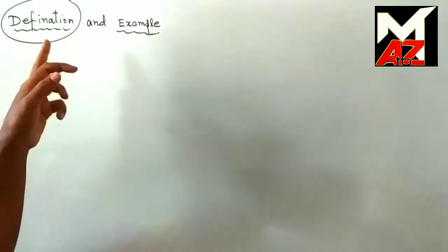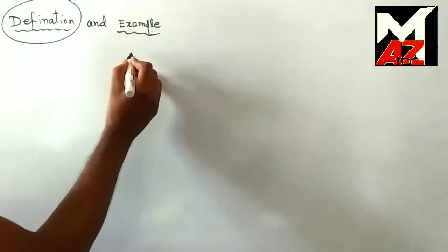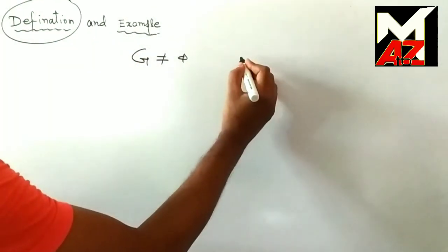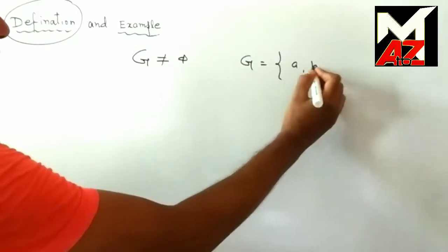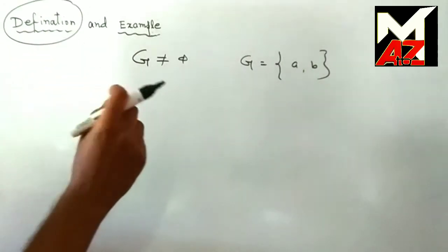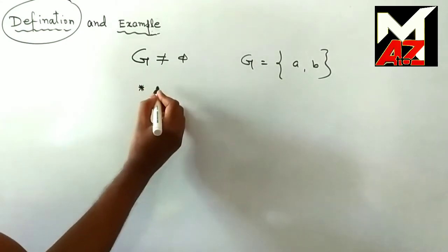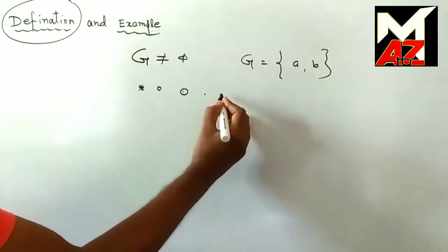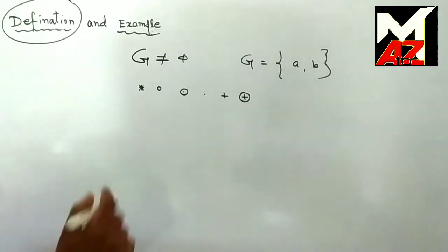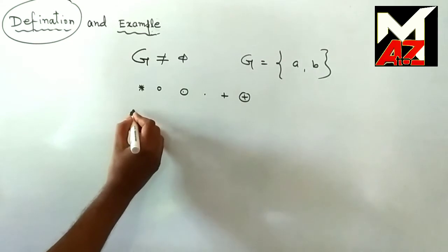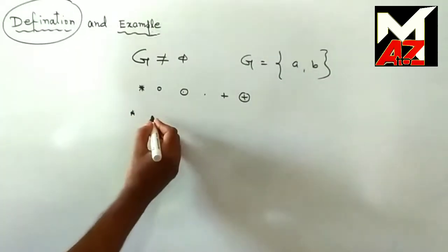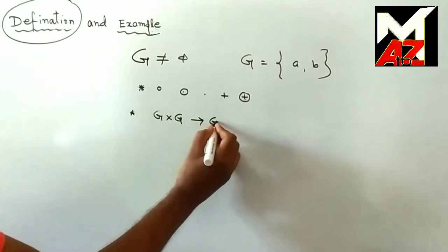Before giving the definition, we introduce a non-empty set G, where G is not equal to the empty set. Here G has two elements, A and B. Now we define a binary composition on G. The binary composition is sometimes denoted by star, circle, dot, plus, or similar symbols. Binary composition star is a mapping which maps from G cross G to G.